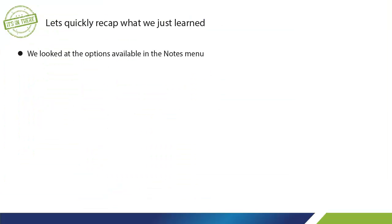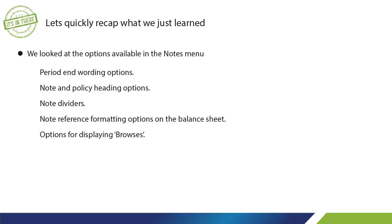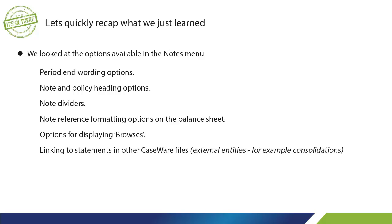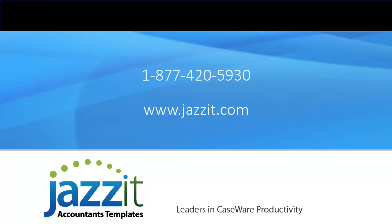In this video, we looked at the options available in the notes menu: period and wording, note and policy headings, note dividers, note reference formatting options on the balance sheet, options for displaying browsers, and linking to statements in other CaseWare files — external entities such as consolidations. We also looked at how the notes link to these external files once the linkage has been established in the notes menu. CaseWare should be easy — find out how at Jasset.com.